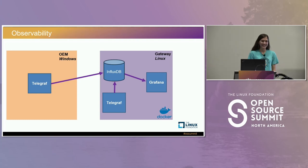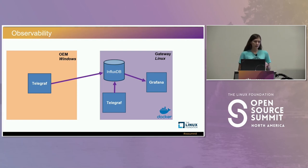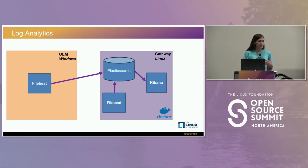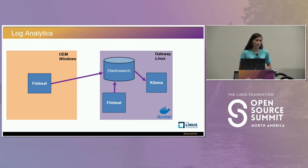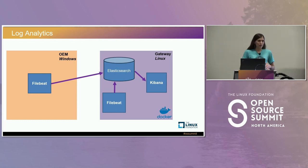For observability we used the TIG stack — Telegraf, InfluxDB for storage, and Grafana — installed on both machines to get system health metrics. For log analytics, we used a variation of the ELK stack: Elasticsearch and Kibana, but with Filebeat instead of Logstash. Filebeat is written in Go, is very efficient, and removed the JVM dependency that Logstash introduced, minimizing additional software requirements. It was installed on both machines with Elasticsearch and Kibana for visualizations.